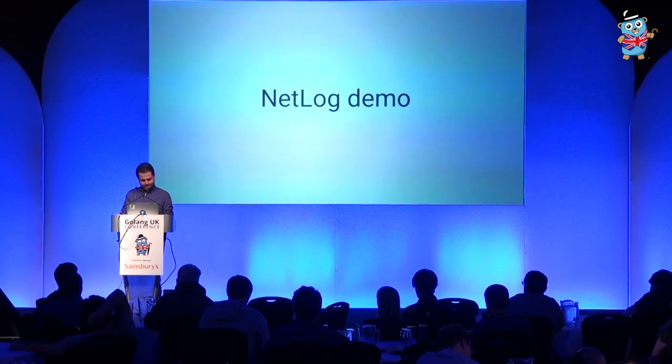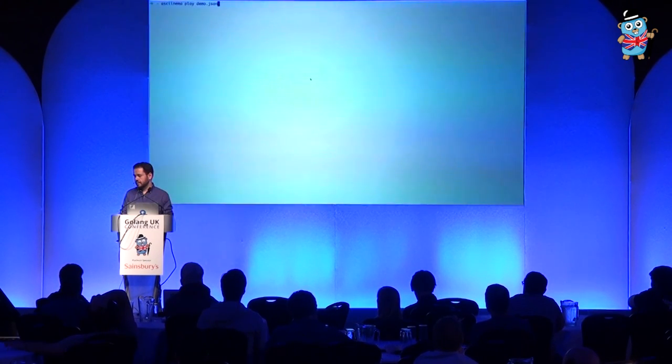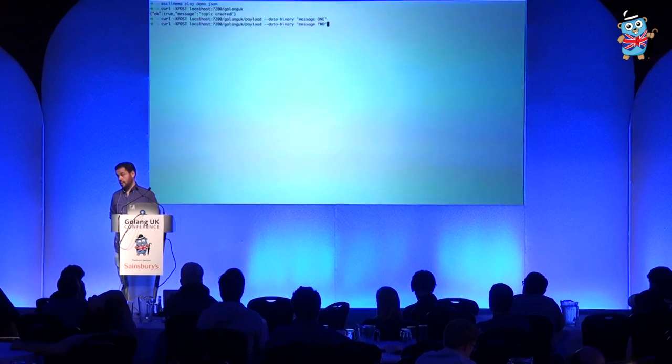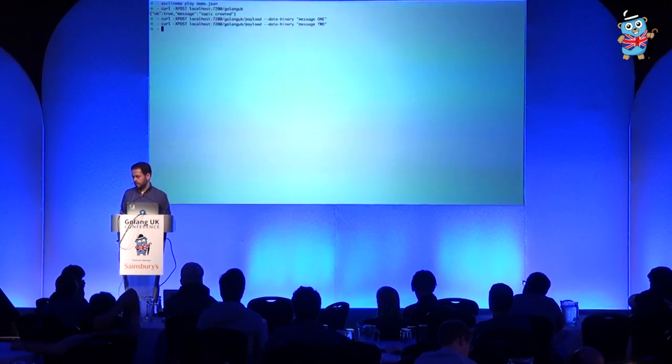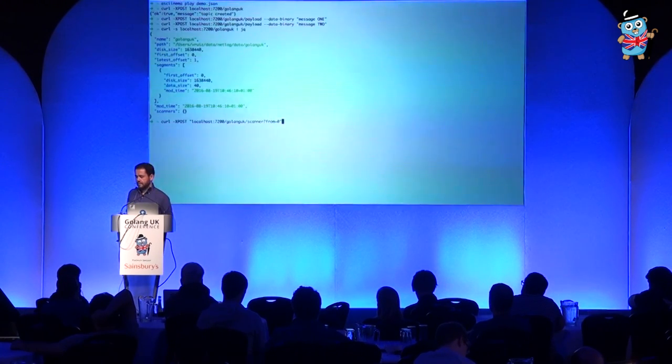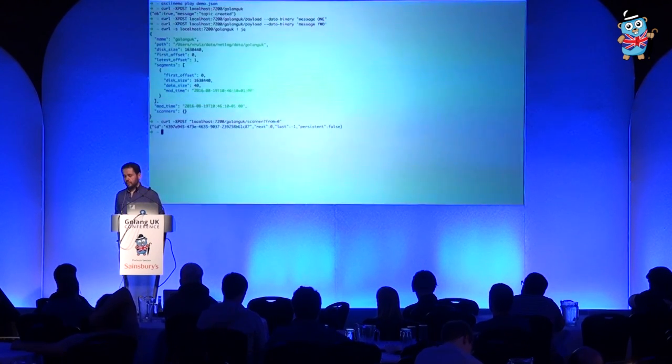Demo time. I decided not to do live typing on stage, so I recorded a small demo in ASCII Cinema — an awesome application if you don't know about it — which will replay what I did last night. We create a topic, or a queue. It's very similar to how Elasticsearch creates an index — very inspired by it. We start pushing data: we put one message, then another. Messages could be any binary data — even a cat image. We can inspect the queue and see we have one segment, check how much disk it takes — mostly pre-allocated index. Then we create a scanner to start scanning from the beginning, get a scanner ID, put it in an environment variable for easy reuse, and use that ID to scan from that offset onwards.